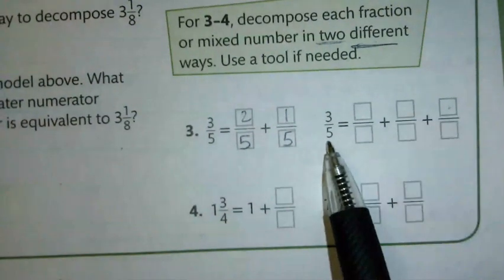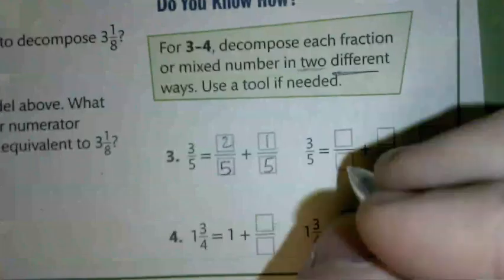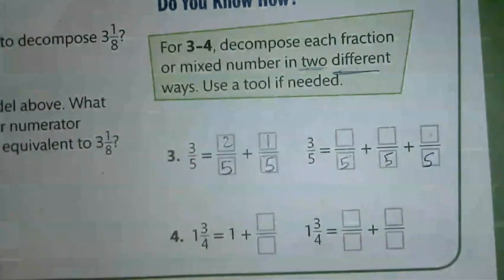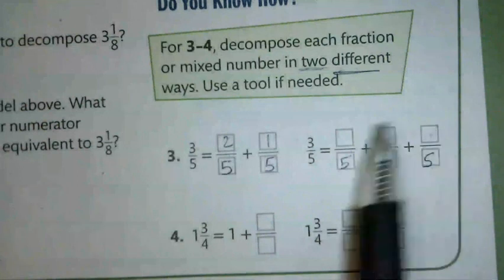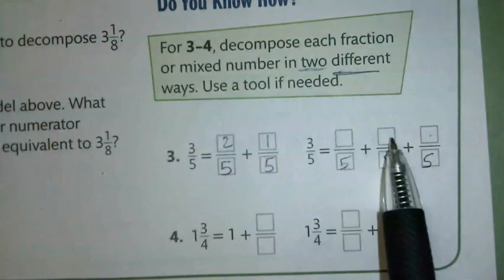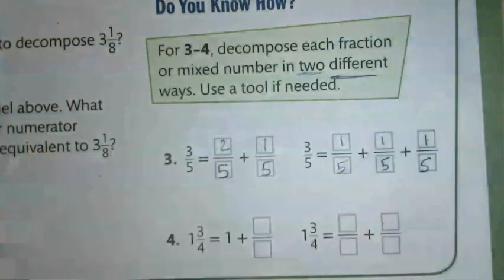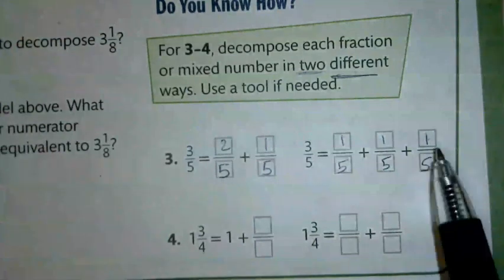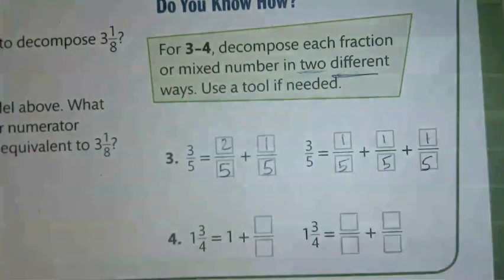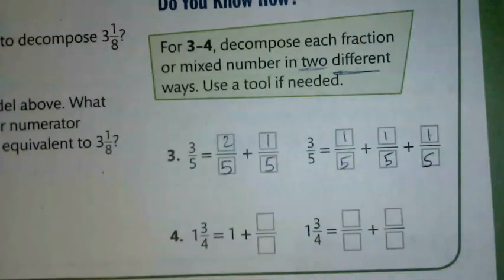Now for the second way: 3/5 broken into three parts. Fifths will be our denominator, and what plus what plus what equals 3? One plus one is two, plus one more is three — so 1/5 plus 1/5 plus 1/5 equals 3/5. That's how we can decompose 3/5 into three 1/5 parts.